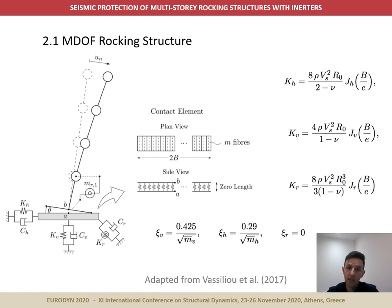Energy loss during impact is incorporated by taking into account the energy radiated into the underlying ground. Accordingly, the structure is assumed to rest on a rectangular rigid foundation, while the soil underneath is represented by a set of vertical, horizontal, and rotational springs and dashpots whose mechanical properties are determined according to standard machine vibration theory.